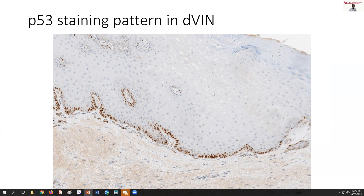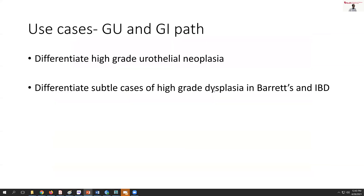We found P53 useful in evaluating margins for DVIN cases, which can sometimes be challenging, as well as in phenotyping the carcinomas that may develop from this as HPV-independent, because these will uniformly be P16 negative. P53 also has use cases in other organ systems — urothelial neoplasms and some cases of dysplasia in IBD or Barrett's esophagus — though we won't discuss those today.